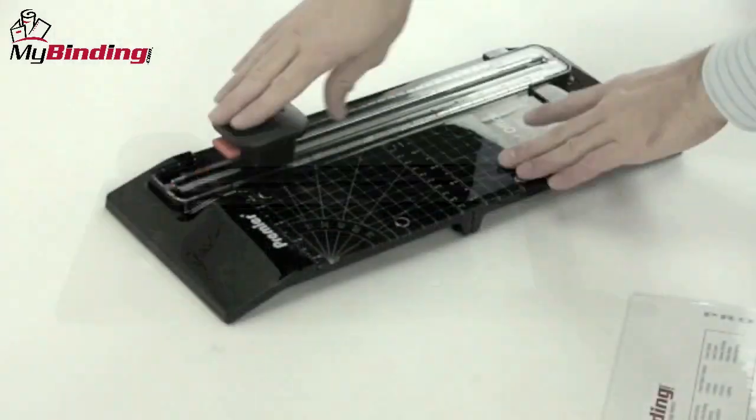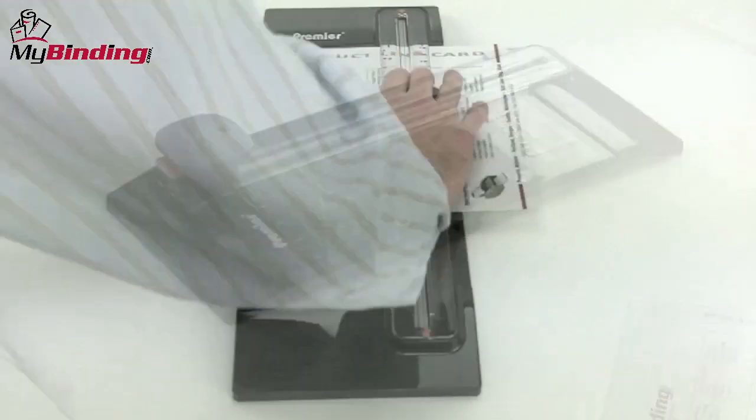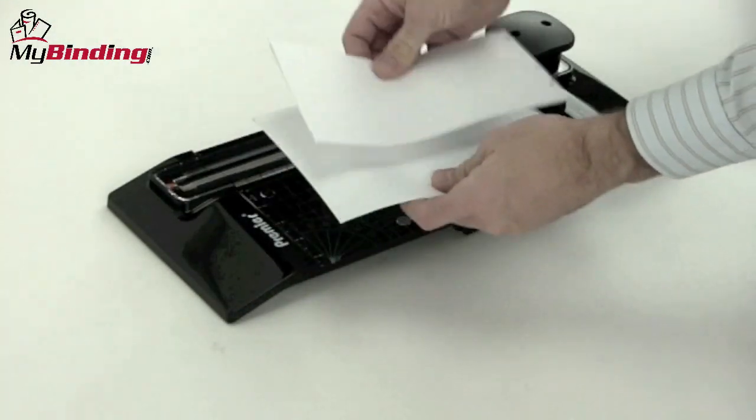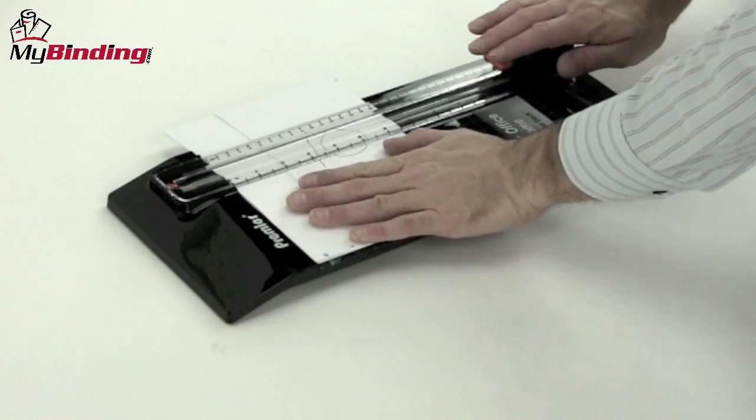This lightweight personal trimmer is great at both cutting as well as perforating. It's 12 inches long and can handle up to 10 sheets of 20-pound paper at a time. That was just five and here's a look at 10.